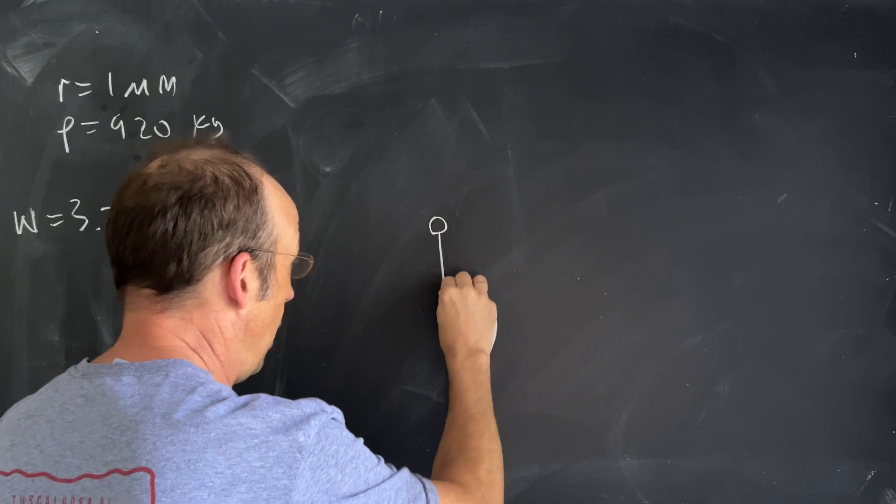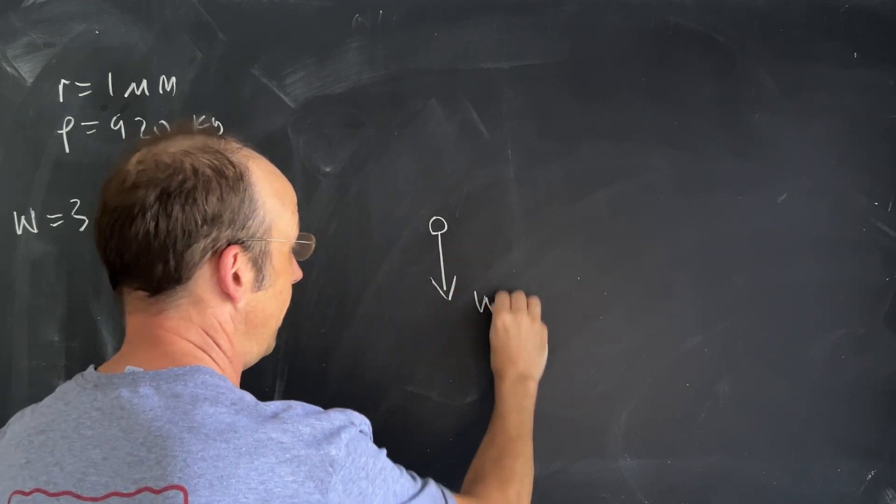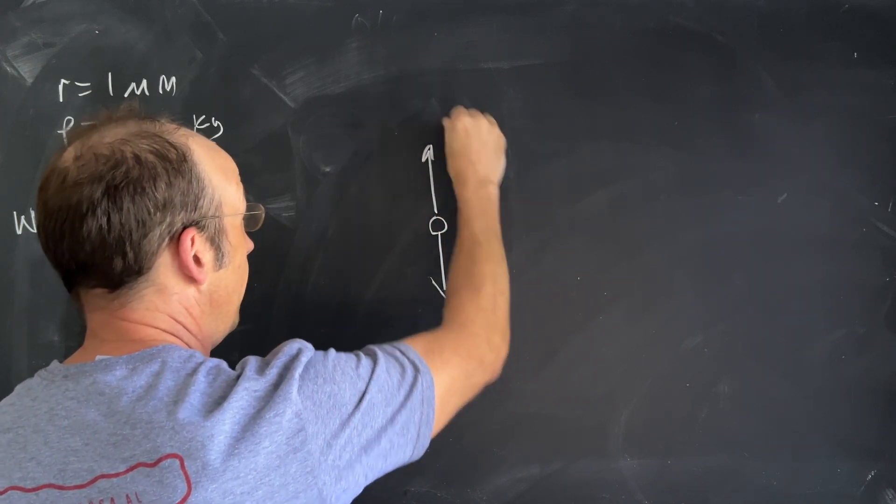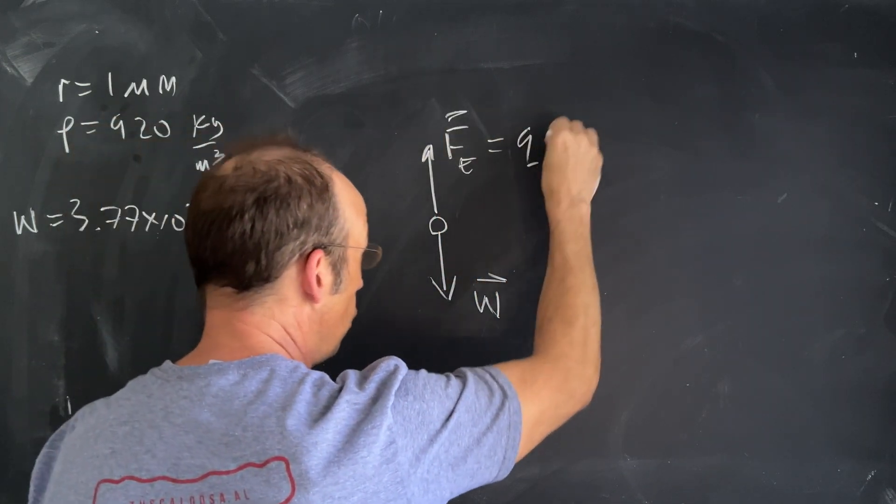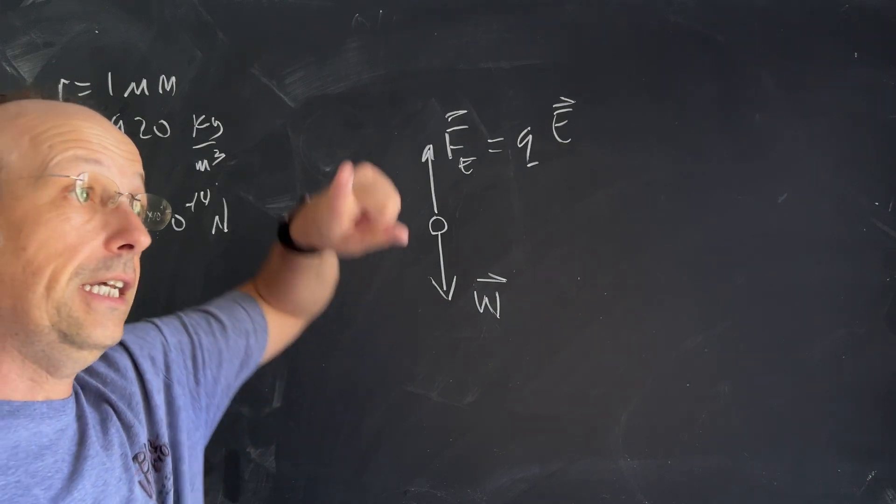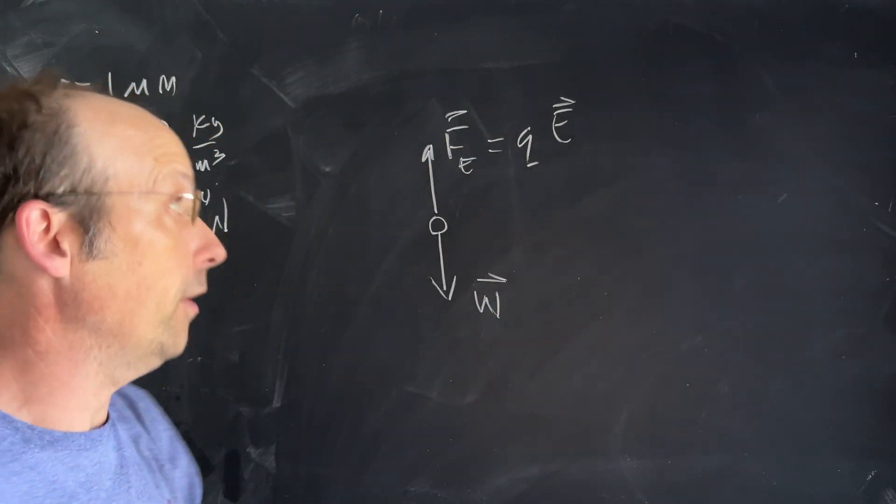I know I have the downward gravitational force, that was the weight, and then the upward electric force Fe which would be Q times E. Remember the electric force is the electric field times the charge you put in the field.